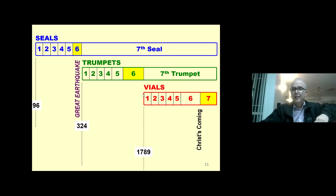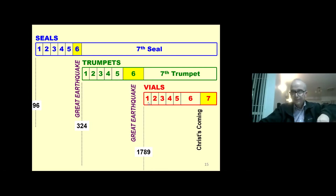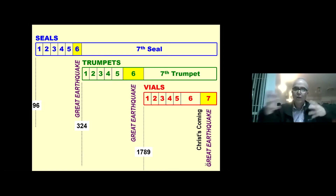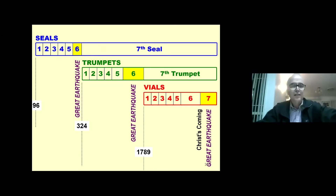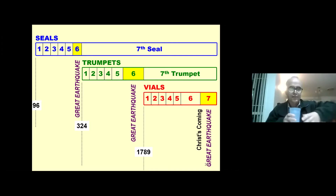The seventh trumpet sounds in the year 1789 with the next great earthquake, and then Christ comes at the final earthquake. So the first earthquake occurs in AD 324, ending the sixth seal and bringing in the seventh seal. What we're looking for today is a period of time leading up to 324 AD. I'm going to ask brother Michael to please read Revelation chapter 6, verses 12 to 17.